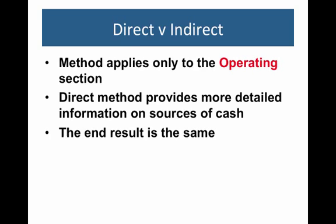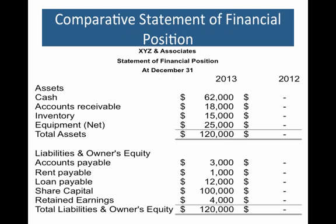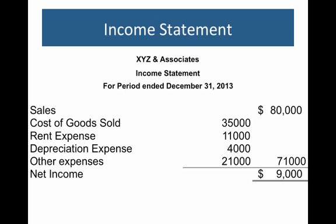Let's start with our income statement. Here we have one for XYZ company — we have our sales, cost of goods sold, three expenses, and an overall net income of $9,000. So that tells us our operations earned $9,000 of income. But how much cash did that actually generate? Let's take a look.